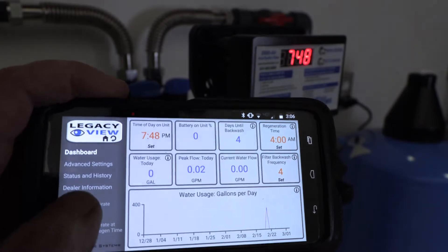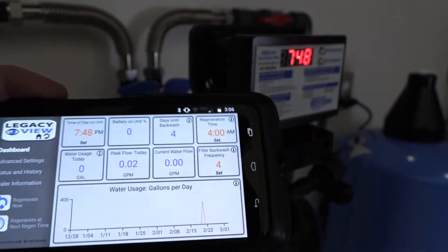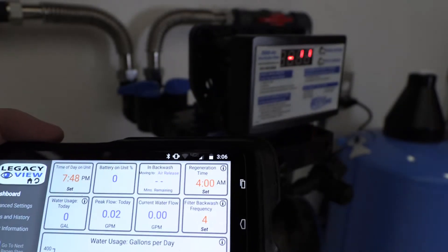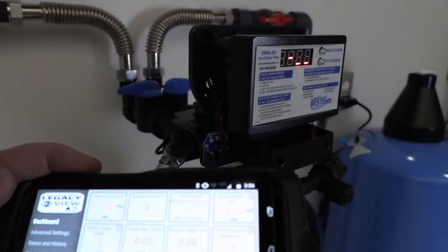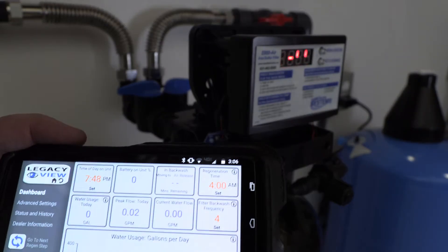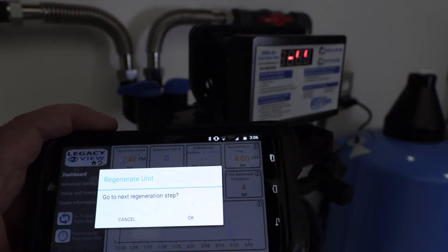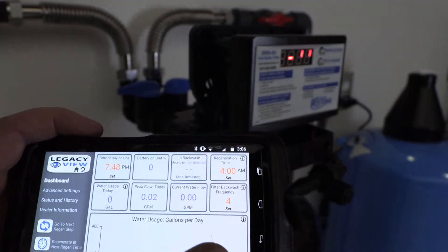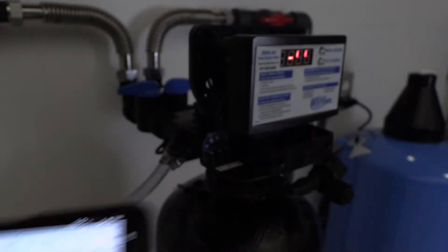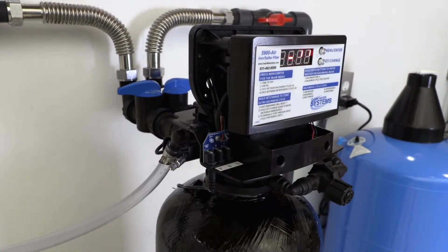Now we're going to go into the regen process. I'm going to push this button that says regen now, click OK, and it's going to go into cycle one. That's the air release, which we're not going to need yet, so I'll go to the next regen step. Now we're going into cycle two.